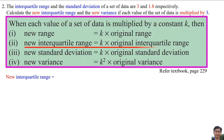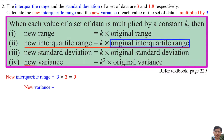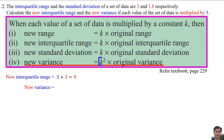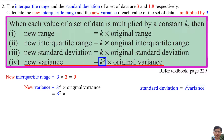So the new interquartile range equals k times original interquartile range. k is 3 and the original interquartile range is 3, so the new interquartile range equals 9. The new variance equals k squared times original variance. k squared is 3 squared. However, we are given only the original standard deviation. We know that standard deviation equals the square root of variance, so variance equals standard deviation squared. The original variance equals 1.8 squared. So the new variance equals 3 squared times 1.8 squared, which equals 29.16.